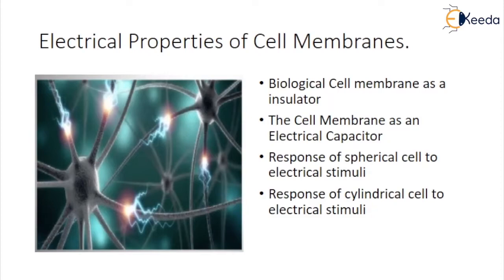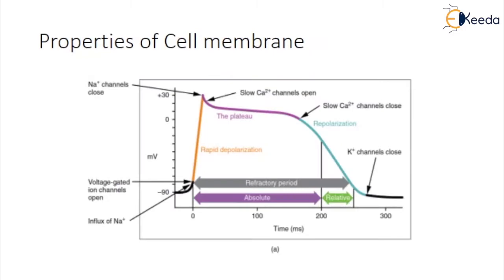We will see how cell membrane acts as a capacitor and response to spherical cell to electrical stimuli, then the response of cylindrical cell to electrical stimuli. One of the simplest physiological units is the cell. It has the power of maintaining itself alive given suitable surroundings. The endocrine pancreas consists of clusters of cells called islets of Langerhans.